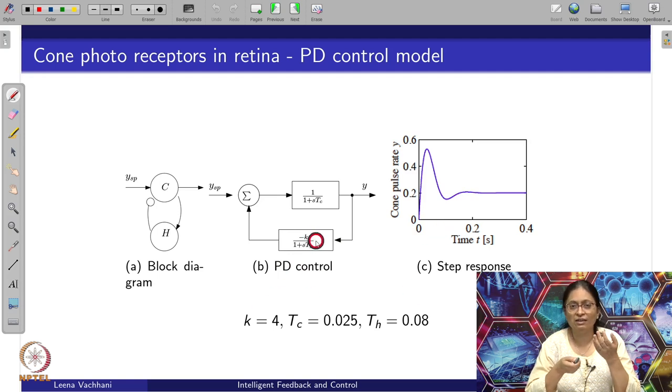We can say that this gain and time constant of the PD control is sacrificed, and accordingly medication can be given. If my cone or process plant dynamics has changed because of aging or other factors, one can see that the transfer function itself has changed. So what kind of response can you expect?